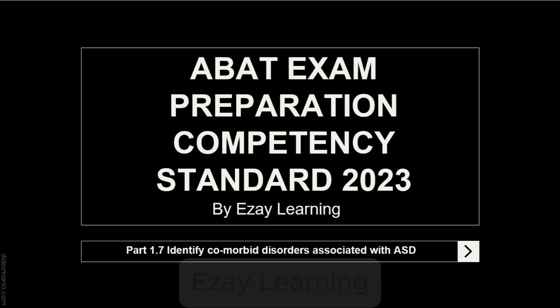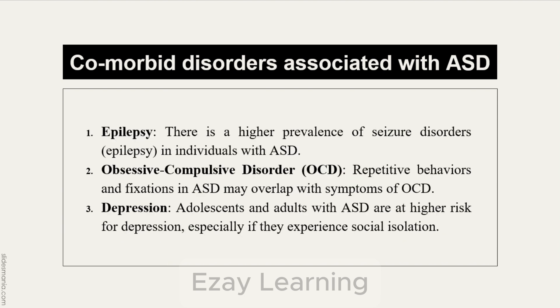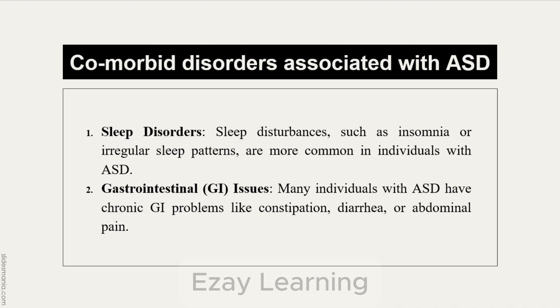Today we will be talking about identifying co-morbid disorders associated with AST. There are some disorders that often co-occur with AST, and these are: anxiety disorders, attention deficit hyperactivity disorder, intellectual disabilities, epilepsy, obsessive compulsive disorder, depression, sleep disorders, and gastrointestinal issues.